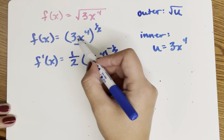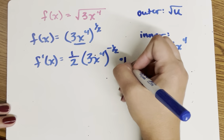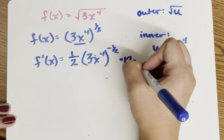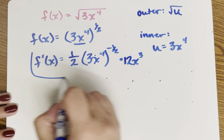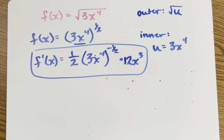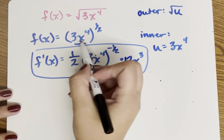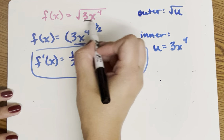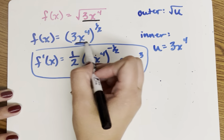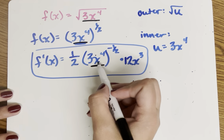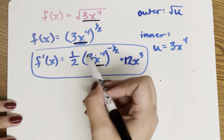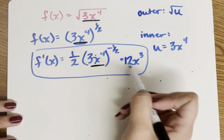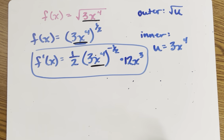The derivative of 3x to the fourth: I bring the 4 down, so 12x to the third. So before simplifying, this is my derivative. I've applied chain rule, kept what's inside the radical or the parentheses the same when I applied the power rule, and then taken the derivative of the inner function and multiplied by that at the end.